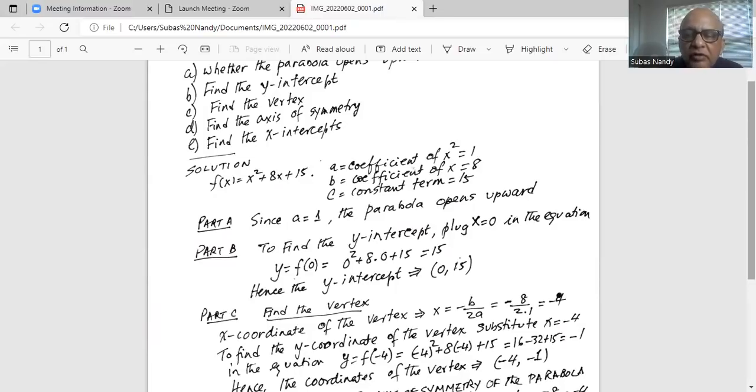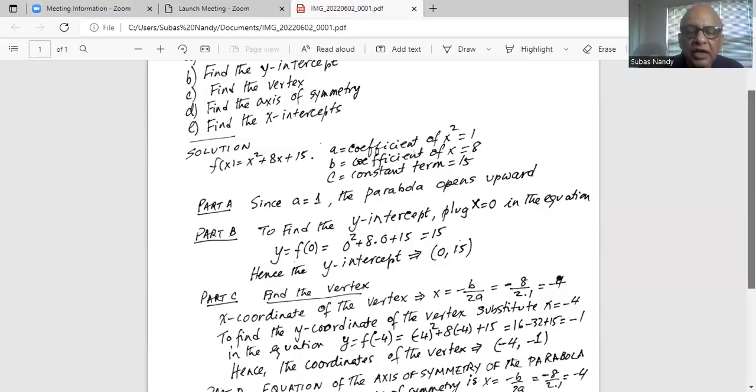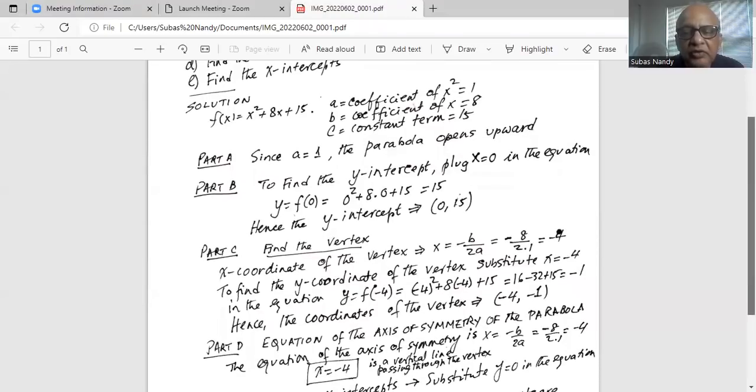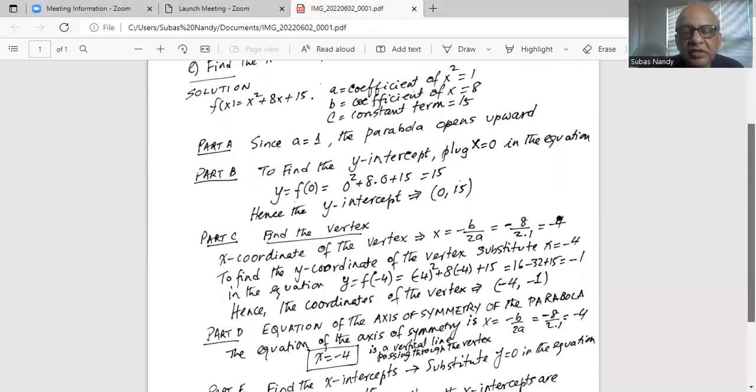To find the y-coordinate of the vertex, we substitute x equal to minus 4 in the equation. So we are finding the function value at x equal to minus 4. So minus 4 in parentheses squared plus 8 times minus 4 plus 15, which is 16 minus 32 plus 15, which is 16 plus 15 is 31 minus 32 is minus 1. Hence the coordinates of the vertex are x-coordinate minus 4, y-coordinate minus 1.